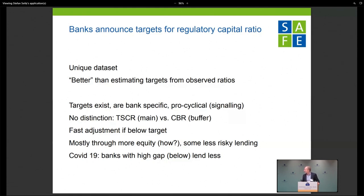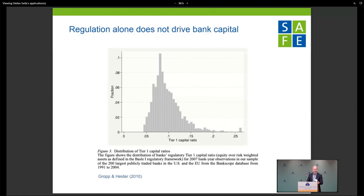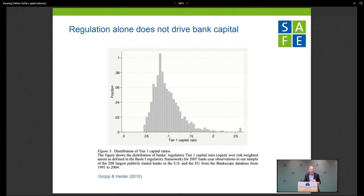The deep dive during COVID-19 shows banks that had a large gap — mostly the action below — banks that were below what they had announced: COVID hits, and they cut lending. I really liked the paper because it brought me back to something I was looking at many years ago. There was a time when people thought banks are super boring because regulation determines their capital structure. Just showing the histogram versus Basel I — where you should have at least 4% and the distribution is truncated at 4%, but some banks were holding 25% — that seems not really in line with regulation determining it all. This paper is in that tradition: we really need to understand at the bank level what they're doing.